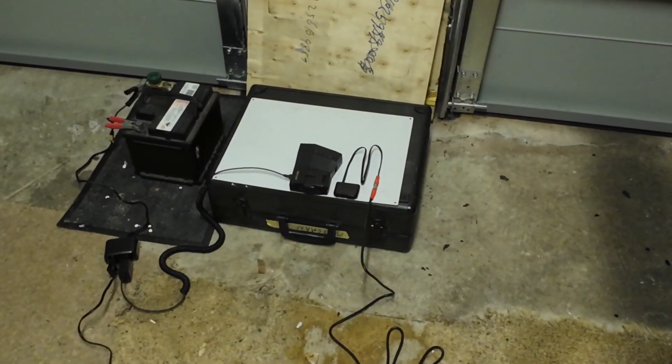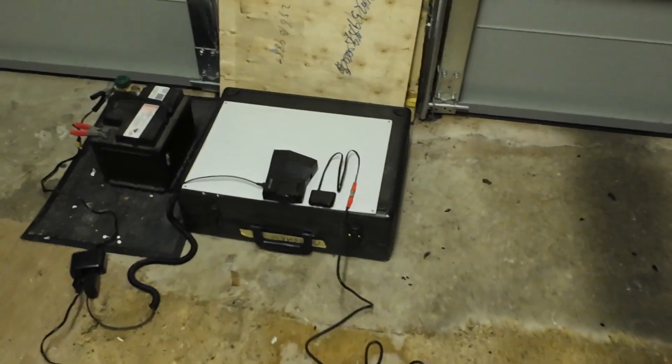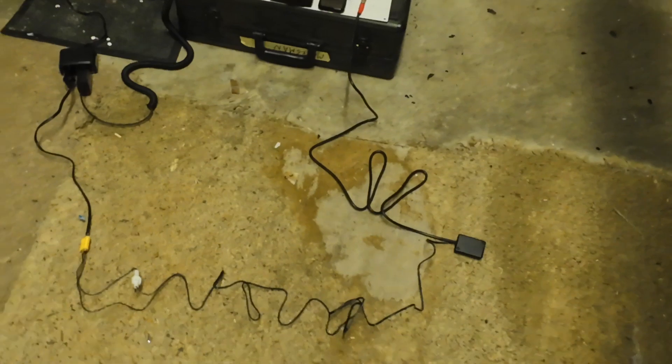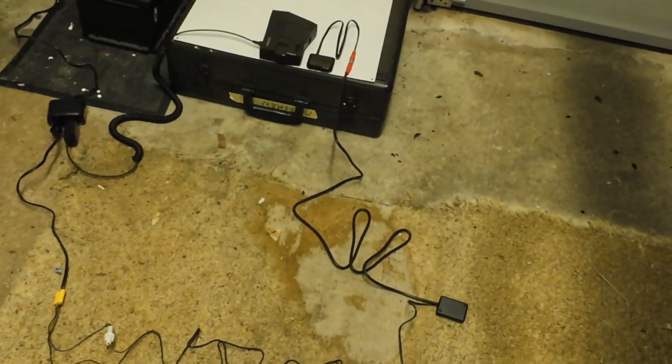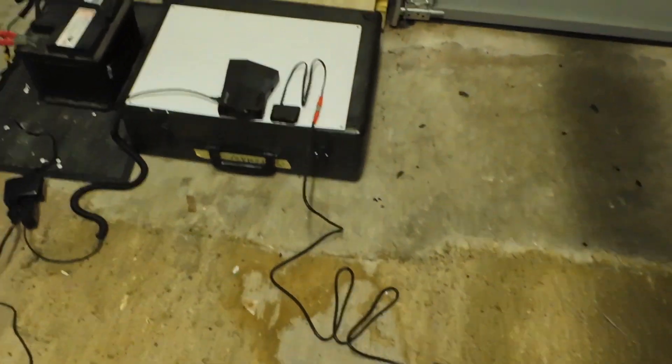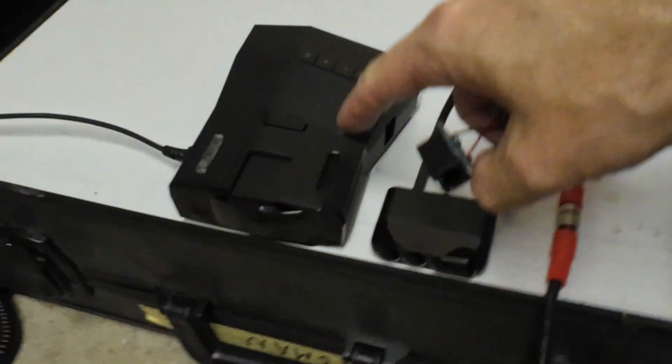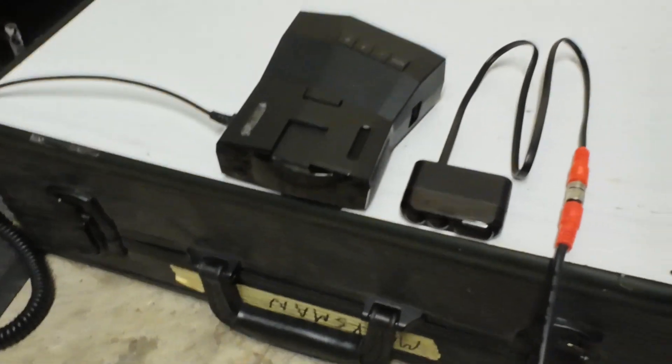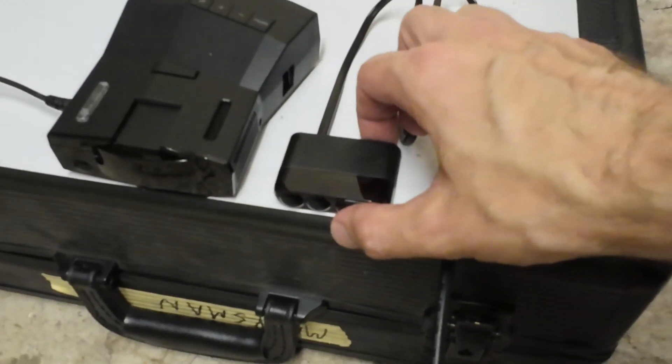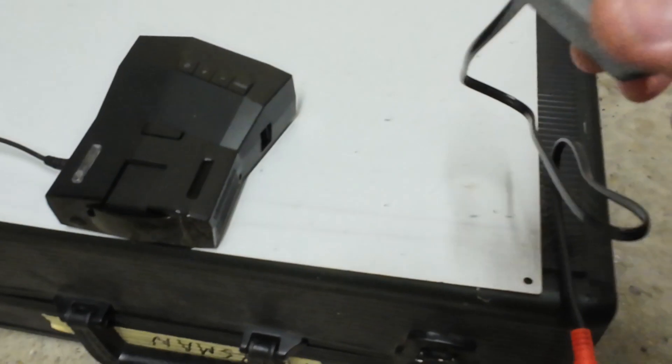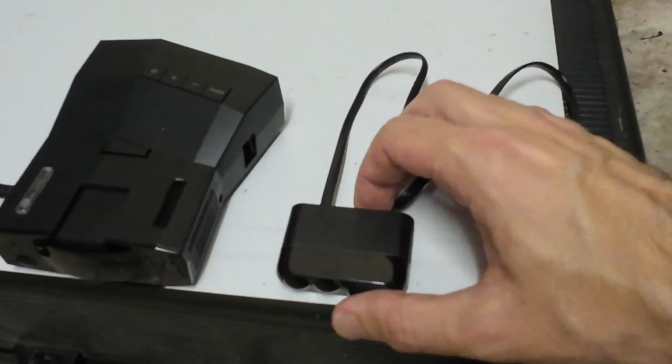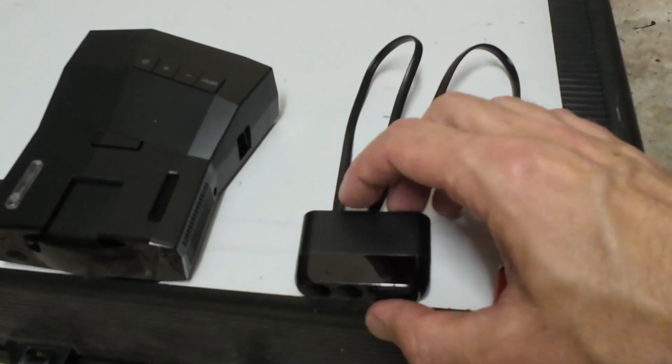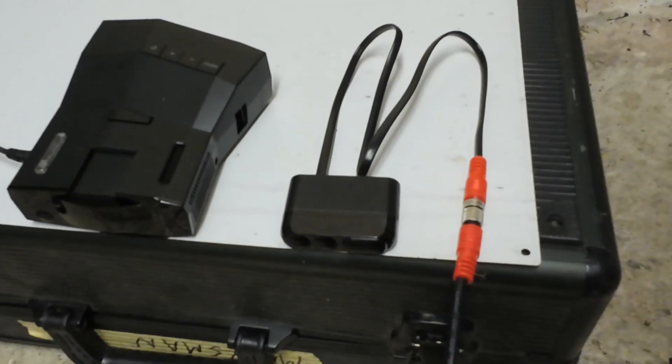So yeah, essentially what we have here is a wireless laser sensor. We've got the Uniden R8 here which is just a standard Uniden R8, then we have a new laser head. It's not a jammer, it's just a laser sensor - a very, very good laser sensor.